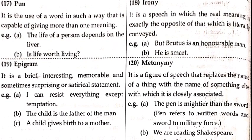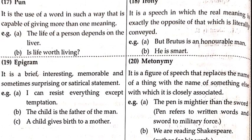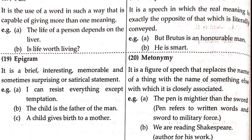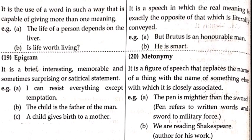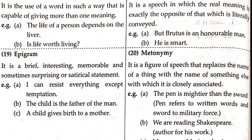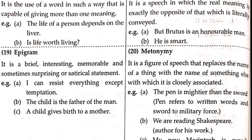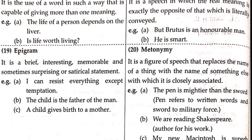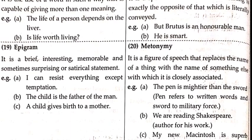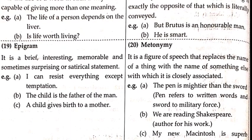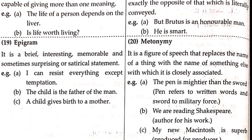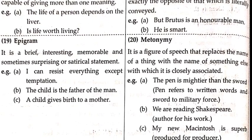Next, epigram. It is a brief, interesting, memorable, and sometimes satirical or surprising statement. Example: 'I can resist everything except temptation' — he can resist everything but not his own temptation. 'The child is the father of the man' — a child cannot be the father of a man, but this brief, interesting poetic line is called an epigram. 'A child gives birth to a mother' — such wordplay is known as epigram.